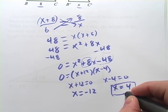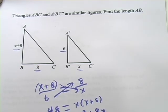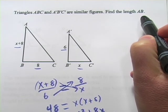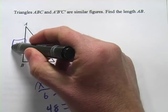But don't stop there. Let's remember what the original problem said. It said, find length AB. Well, AB is X plus 8.